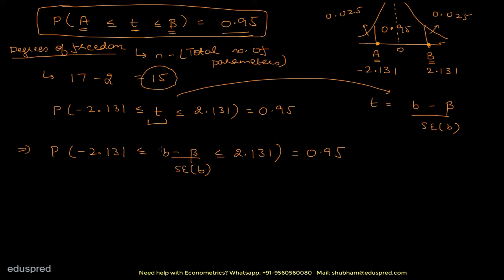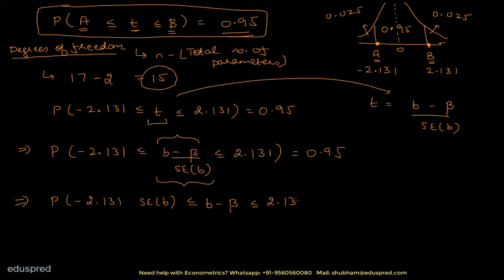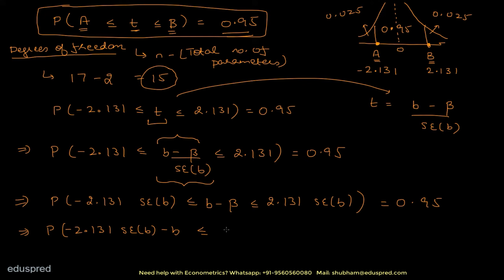After multiplying by SE(b), we subtract b from all terms. The b in the middle cancels, leaving −β in the middle: P(−2.131·SE(b) − b ≤ −β ≤ 2.131·SE(b) − b) = 0.95. Now we need to multiply all terms by −1 to get β by itself.